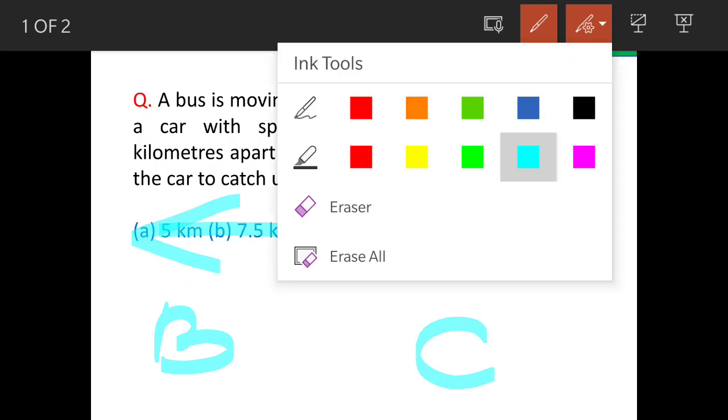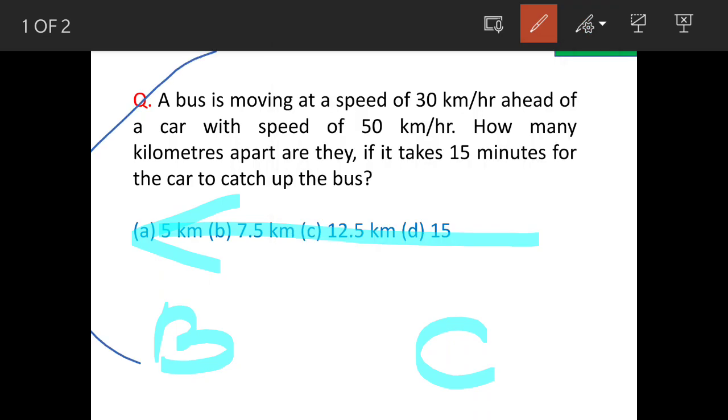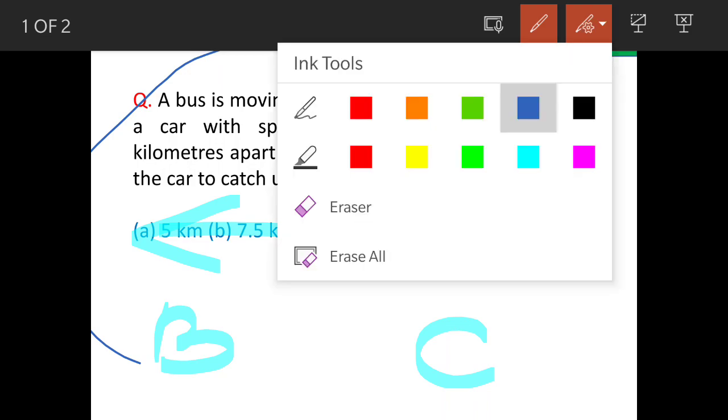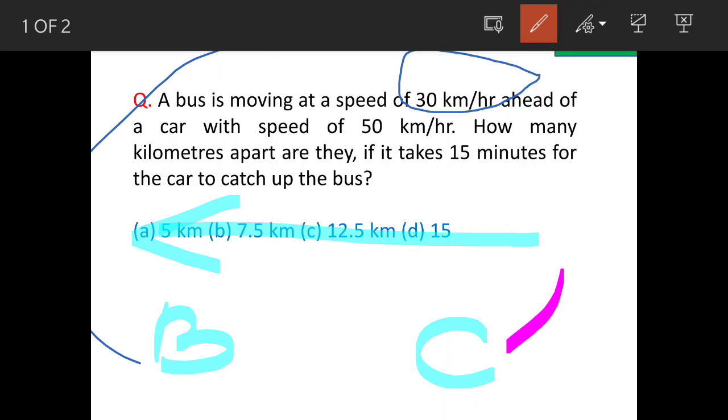Speed of the bus is 30 kilometers per hour and speed of the car is 50 kilometers per hour. So the bus is moving slower and the car is moving faster. At some stage, the car and bus are going to be together.